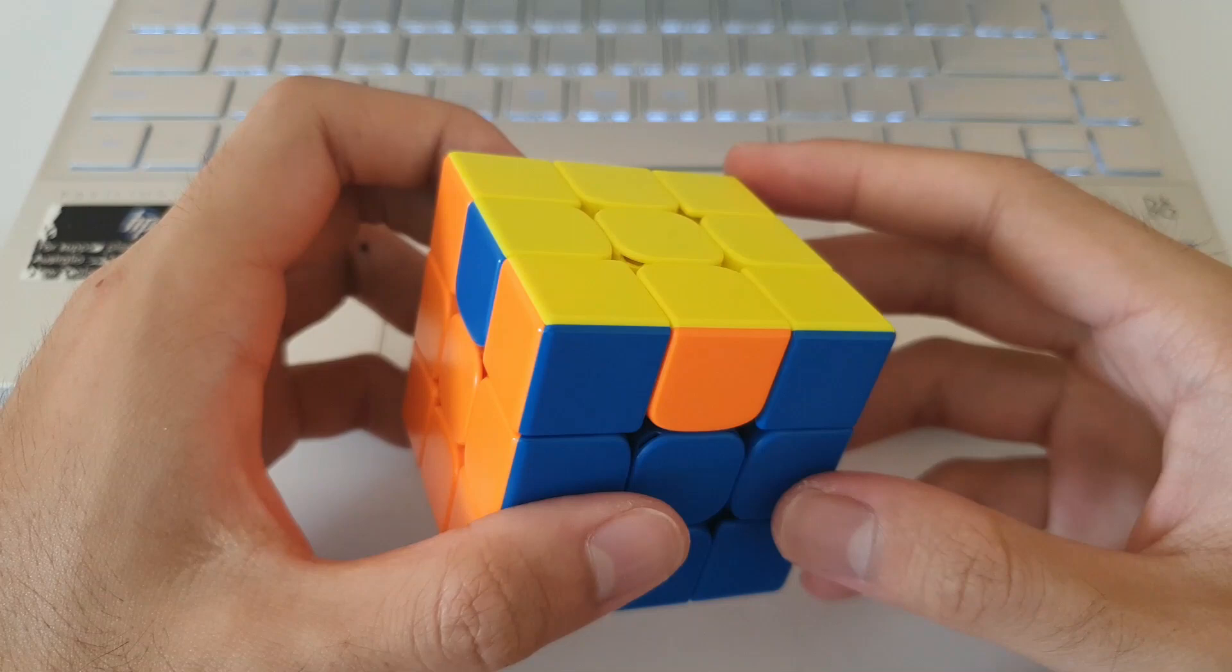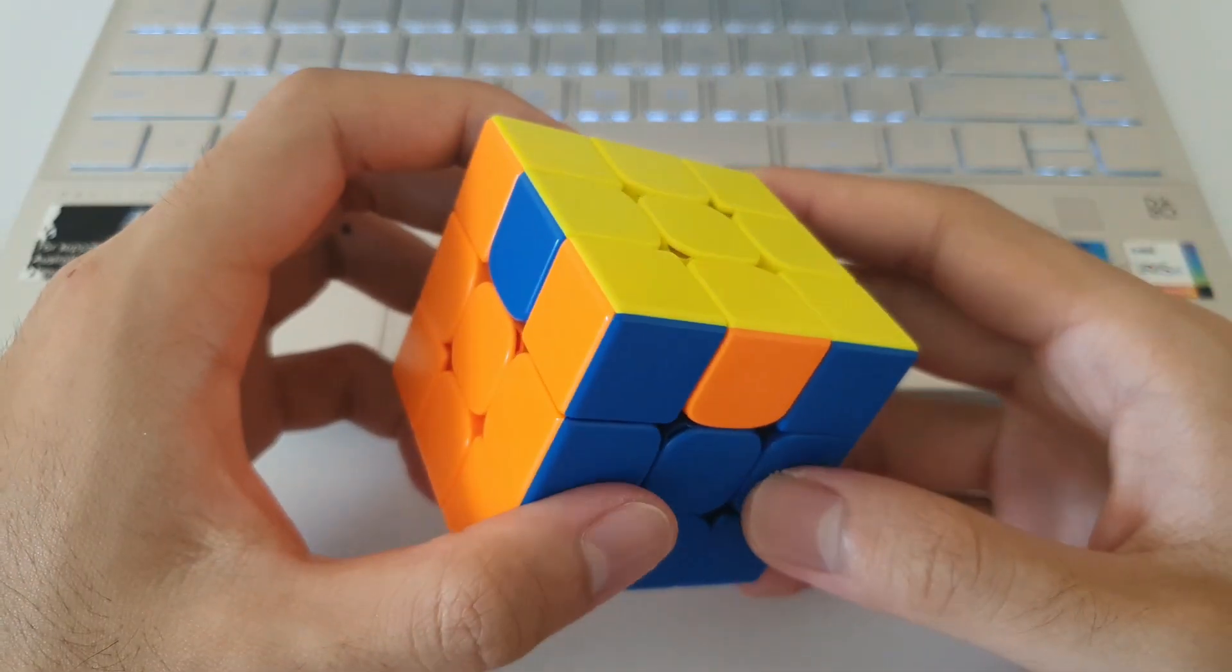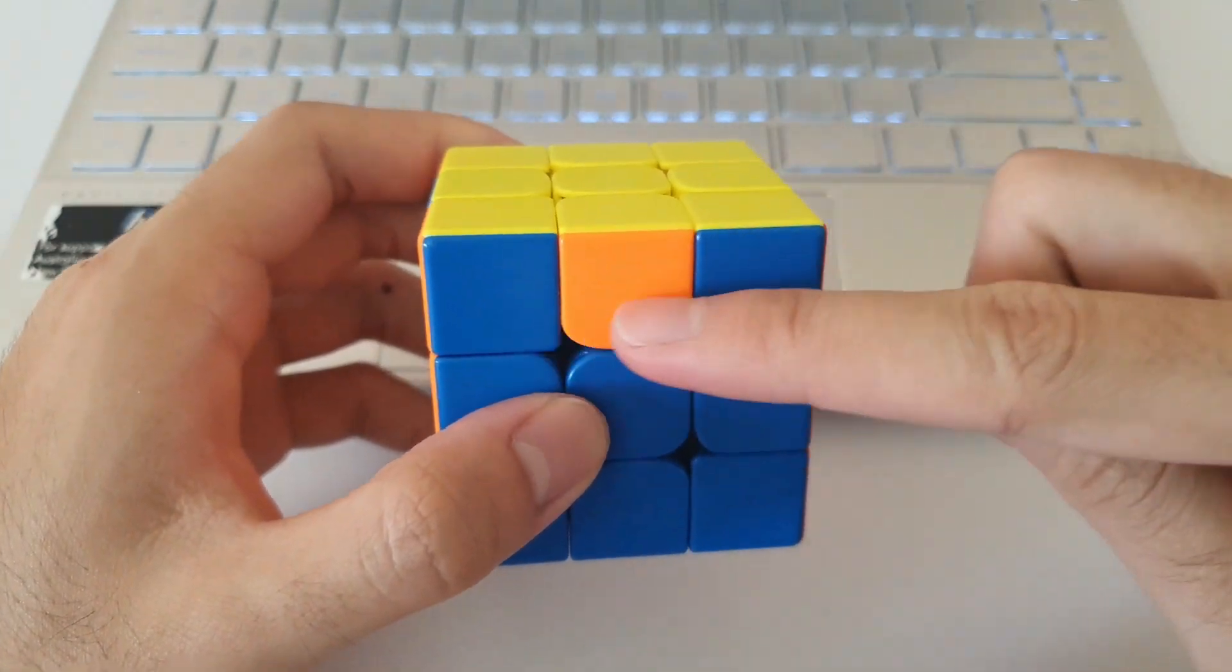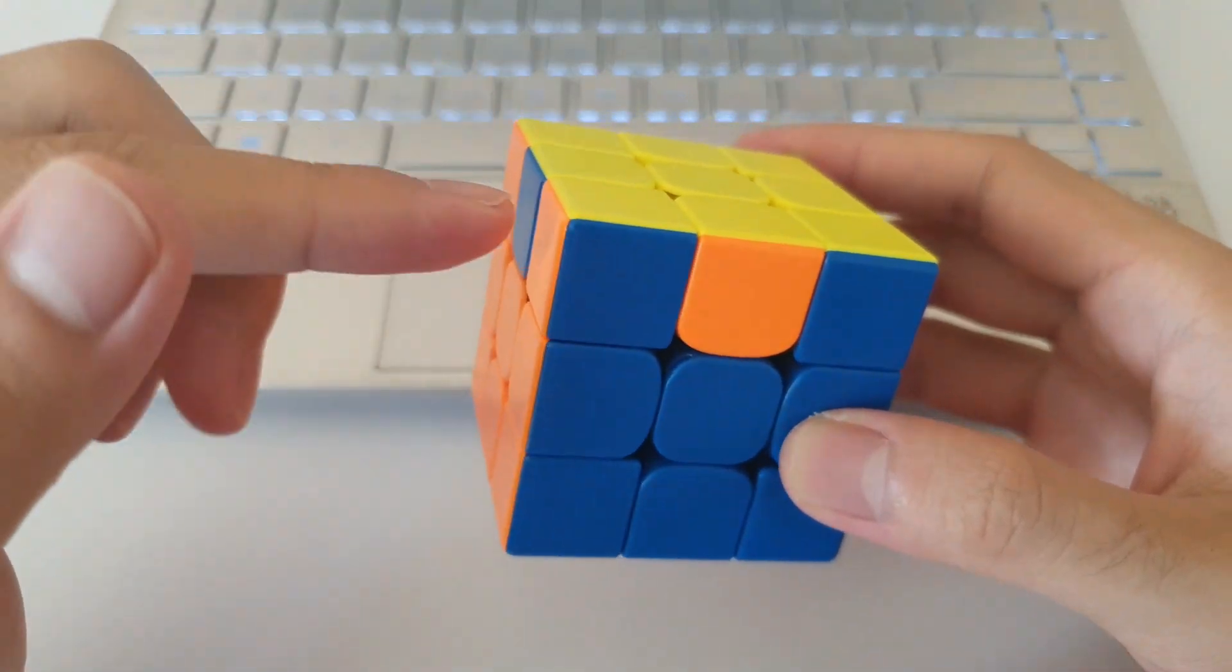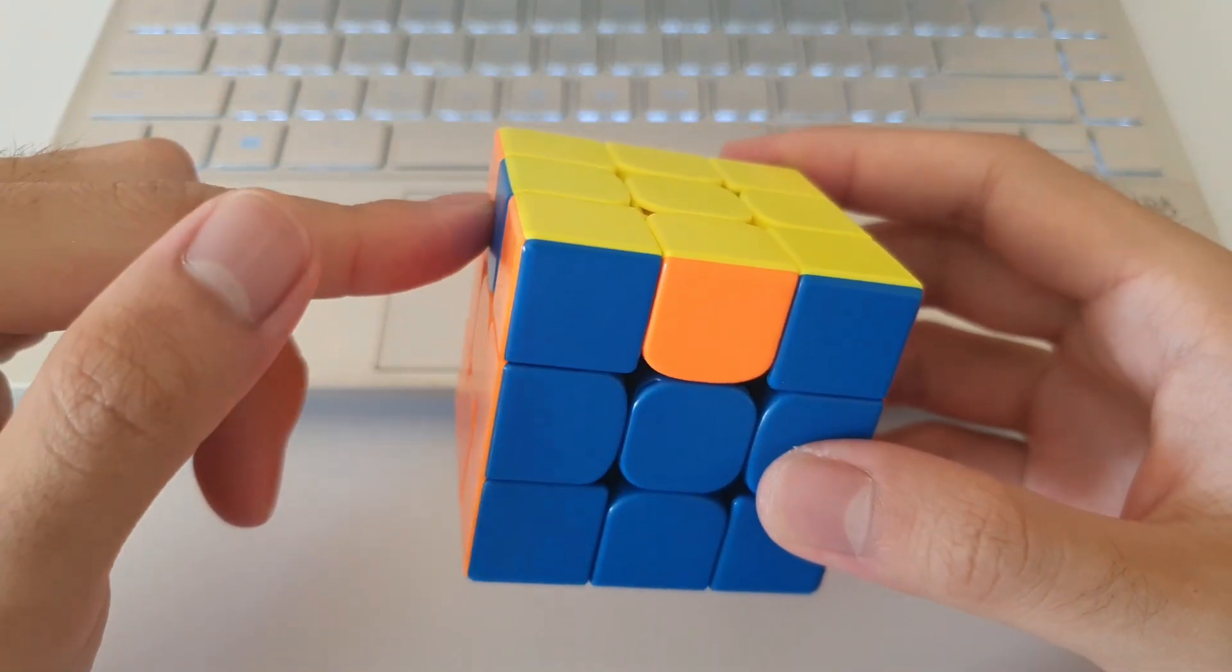However, if you decide to use the M2 algorithm, the one that starts with an M2, then make sure to hold one edge towards you but the other edge towards the left hand side, like this.